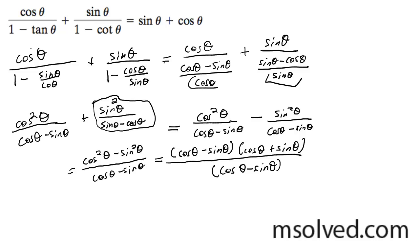As you see here, we've got like terms, one on the top and bottom. These cancel each other out to one, and you end up with your cosine theta plus sine theta.